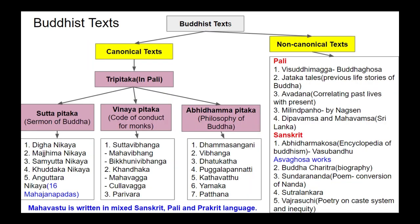Buddhist texts are divided into two branches: canonical and non-canonical. Canonical texts are the three Pitakas written in Pali: Suttapitaka (sermons of Buddha), Vinayapitaka (code of conduct for monks), and Abhidhammapitaka (philosophy of Buddha). The Suttapitaka contains five books: Digha Nikaya, Majjhima Nikaya, Samyutta Nikaya, Khuddaka Nikaya, and Anguttara Nikaya. The Anguttara Nikaya mentions the 16 Mahajanapadas at the time of Buddha.